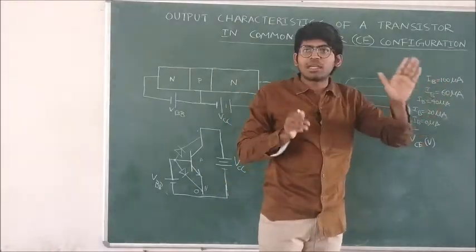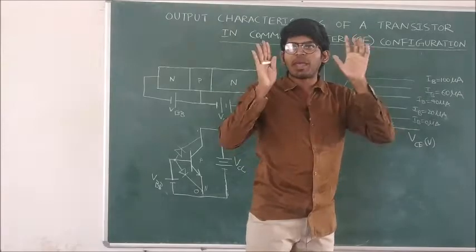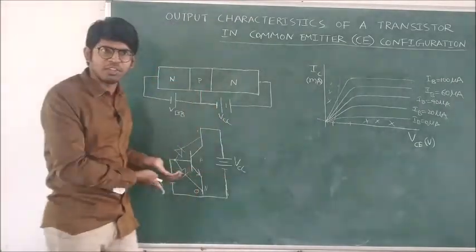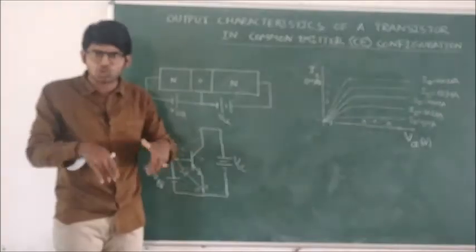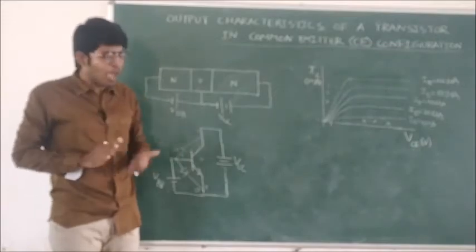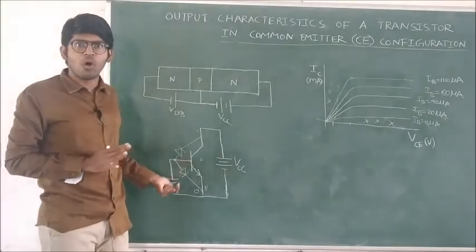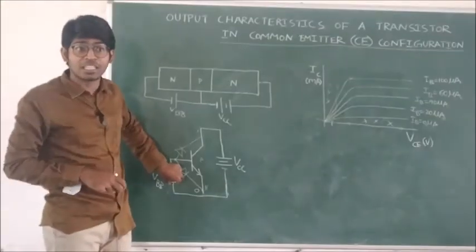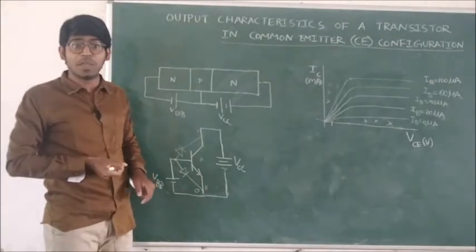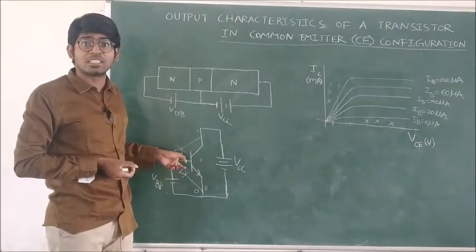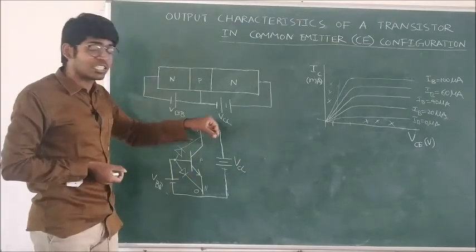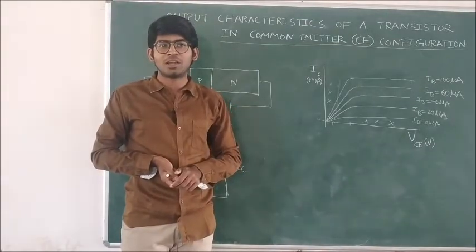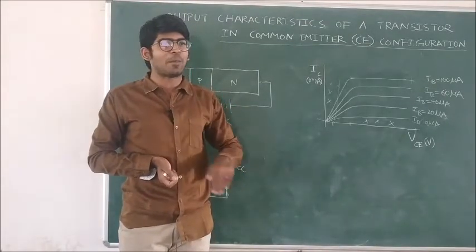Initially, the base current IB is set to 100 micro amperes. We can fix the base current by adjusting the battery voltage VBB — we do not have a current source, but by changing VBB we can control the current going to the transistor base. We adjust VBB so that the base current is exactly 100 micro amperes, and we have fixed it.